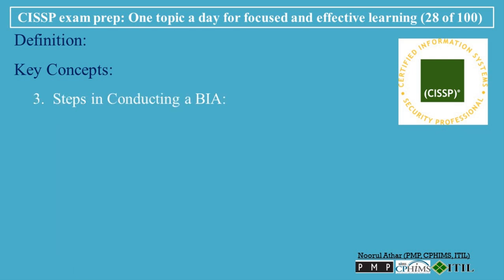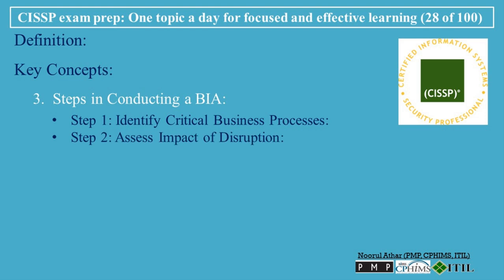Steps in Conducting a BIA. Step 1 — Identify Critical Business Processes: Work with department heads and stakeholders to identify all business processes and their importance to overall operations. Rank processes based on their criticality. Step 2 — Assess Impact of Disruption: Evaluate the potential impact of downtime for each process, focusing on financial, operational, reputational, and legal/regulatory impacts.